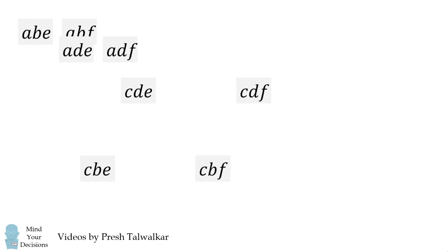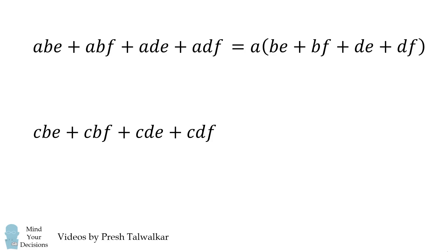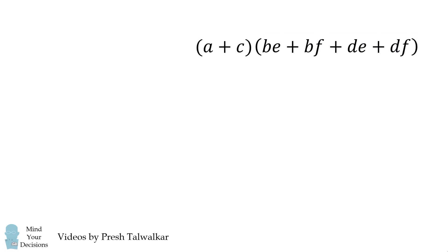We want the sum of all of the vertices. Let's sum the first four and the second four separately. The first four we can factor out an A, and the second four we can factor out a C. Notice the remaining bracketed terms are exactly equal in both of these equations. So we can further factor the sum as A plus C multiplied by the bracketed term.